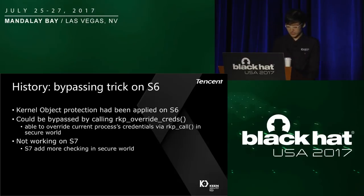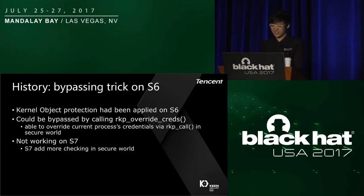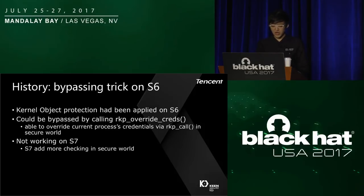There is a history about bypassing Knox on Galaxy S6. The kernel object protection has been applied on Samsung devices for a very long time, but it could be bypassed on Galaxy S6 very simply because of the lack of DFI and additional tracking in the secure world. On S6, you could simply call the kernel function rkp_override_cred to ask the secure world to update the current process credential. Even though this trick doesn't work on S7, the function rkp_override_cred is still useful in my S7 exploit chain in another way — I will show you later.